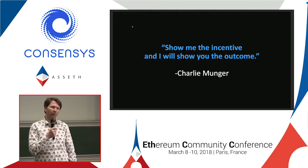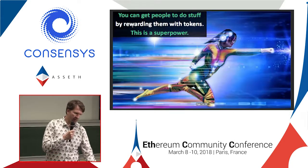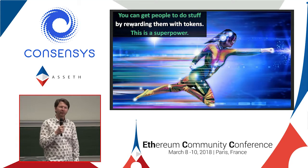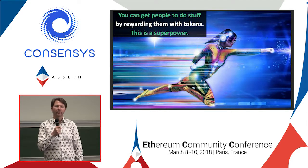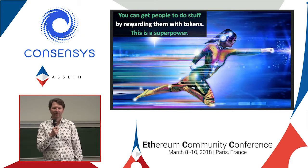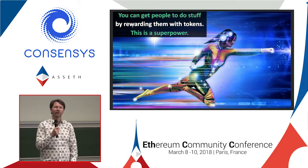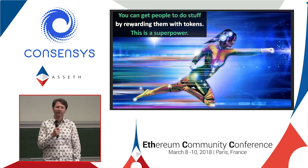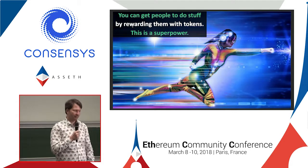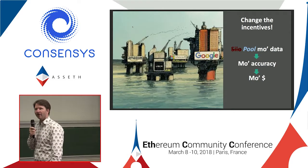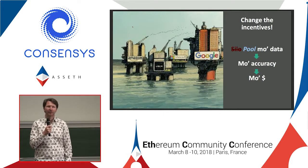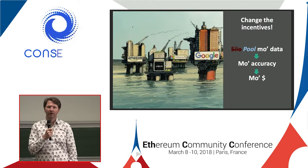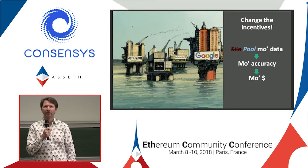Blockchains are a funny thing — they are incentive machines. You can get people to do stuff by rewarding them with tokens, magic internet money. This is a superpower. There are lots of other cool benefits of blockchain — provenance, smart contracts, and all this — but to me, the most powerful benefit is getting people to do stuff. So going back to the problem of data, let's change the incentives using an incentive machine, a blockchain, such that people want to pool the data rather than simply siloing it.